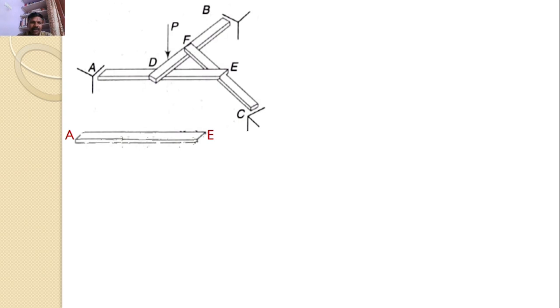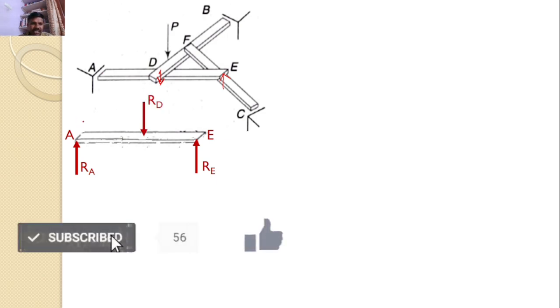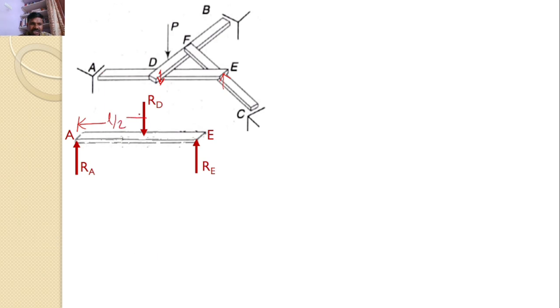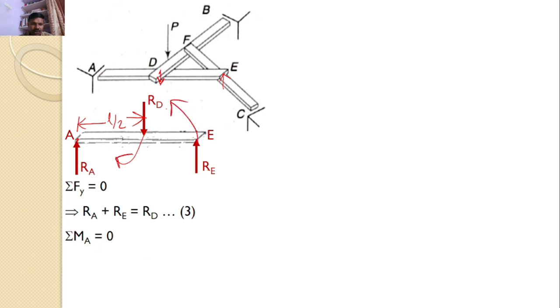Next, let us consider the bar AE. At E, I can find an upward reaction RE. At A, there is a support, hence I can find the reaction RA. And at D, I can find a vertical reaction RD. Since D is the midpoint, this distance is L/2. Applying sigma F_Y = 0, I get RA + RE = RD. Taking moments about A: RD × L/2 = RE × L, which gives RD = 2RE. This is equation number 4.